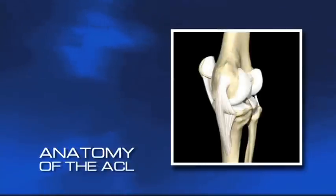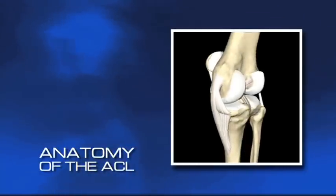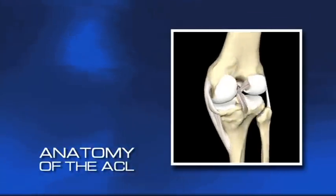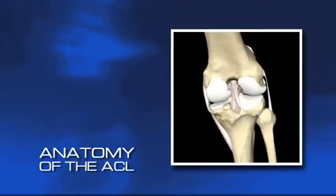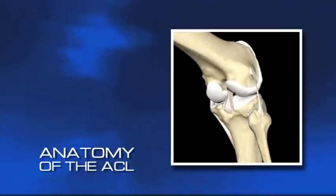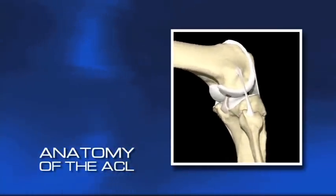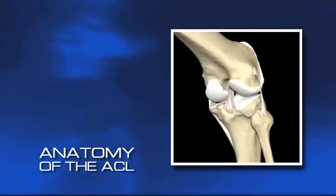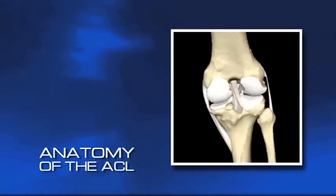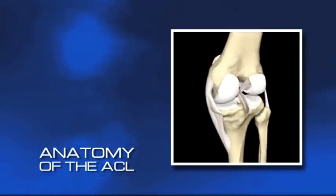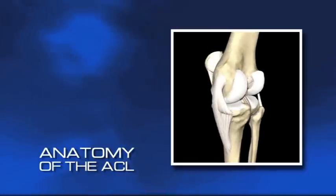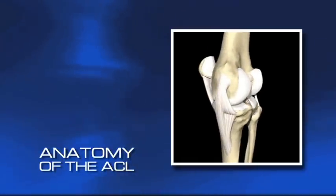A ligament is a fibrous band that connects two bones together, usually across a joint. It's the basic stabilizing block of a joint — hard to tear and well fixed down, but flexible enough to allow movement. It's also a little elastic to better absorb shocks and strains.